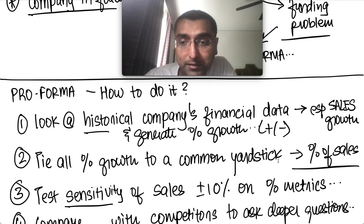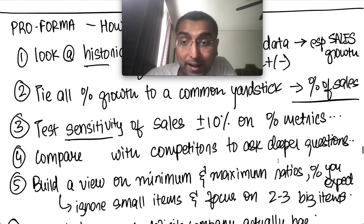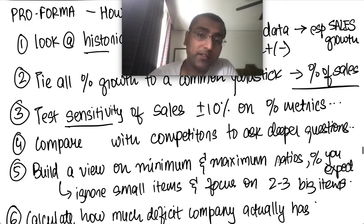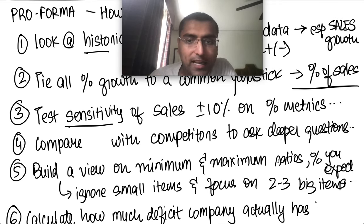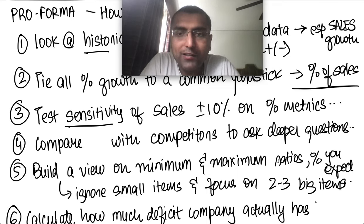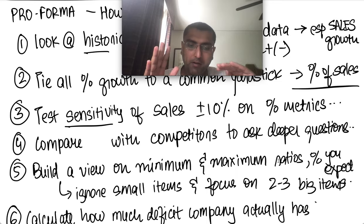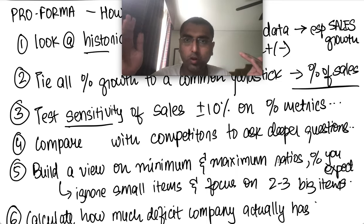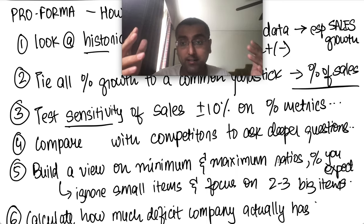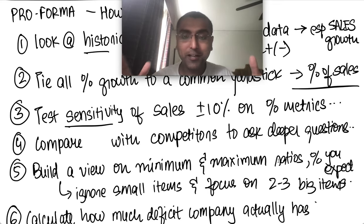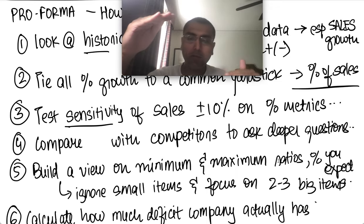Then you test sensitivity — asking what if each variable goes up or down by 10%? You see how metrics change if, say, inventory went up by 10%. Then compare with competitors and find trends and patterns. You'll identify deeper issues and build a minimum and maximum ratio range for what you're comfortable with as an owner or banker.